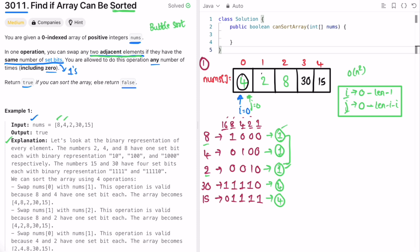Now we can see these two are not sorted. Check if those two are having same set bits. 4 and 2 have the same set bits of 1, so we can swap them. So swap these two elements. 2 will come here and 4 will go here.